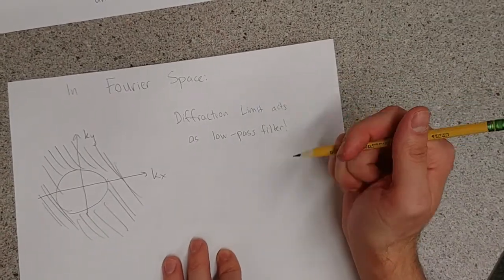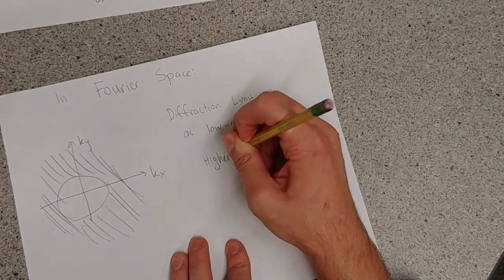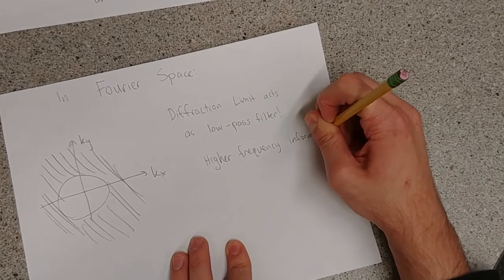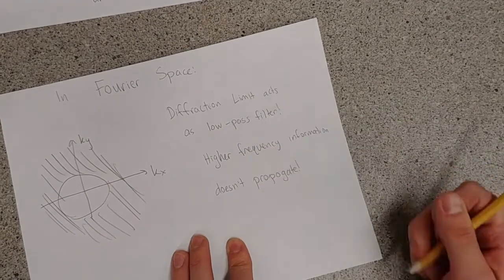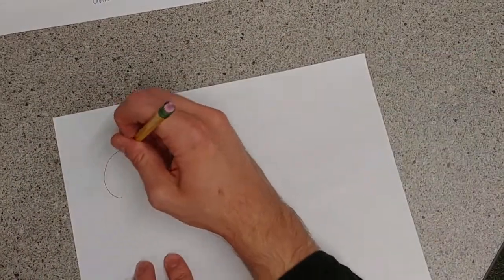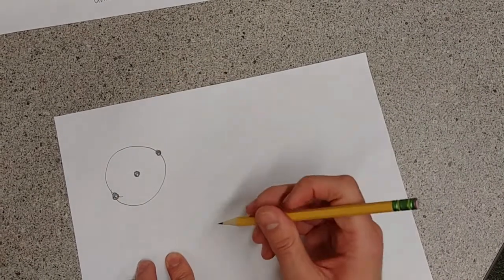So, a way to think about this in Fourier space is that the diffraction limit actually acts as a low-pass filter in Fourier space. So, that means that low frequency signals can go through, but higher frequency information just simply cannot propagate. And this comes from Maxwell's equations.